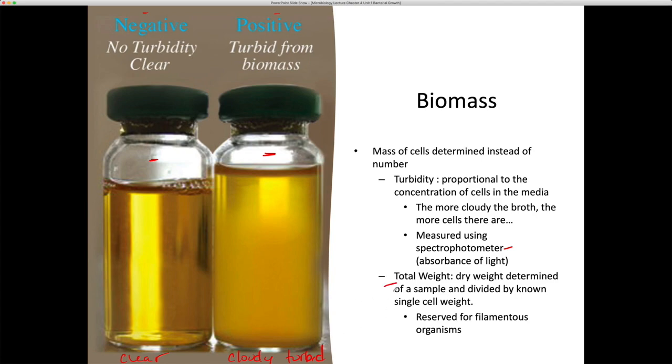The last biomass assumption is total dry weight. This is reserved mainly for very large concentrations of filamentous organisms, where we take the known weight of a single cell, and then we divide the total dry weight of a population by that known, and that'll give us a general idea of how many cells. This is used a lot for cyanobacteria, algae, those sorts of organisms.